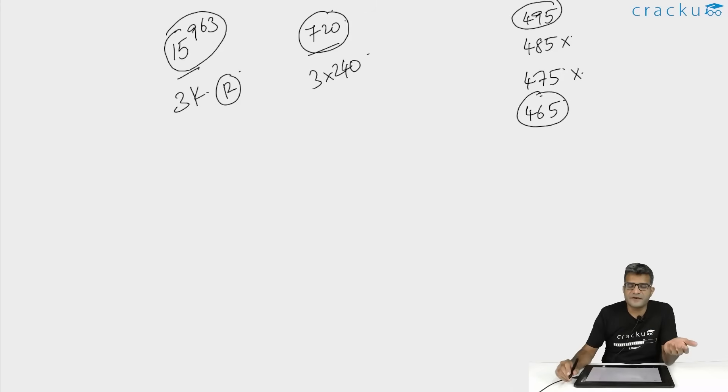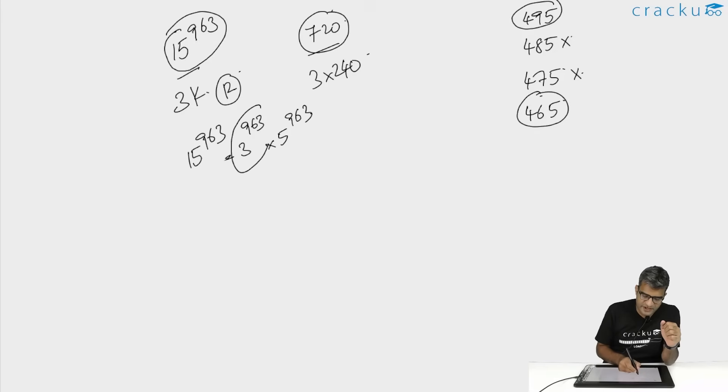Now the second step I realized was that 15 to the power 963, because 15 is 3 to the power 963 into 5 to the power 963, this is actually a multiple of nine. This has 3 to the power 963, so it is a very big power of nine. So I realized that this is actually of the form 9k, which is a multiple of nine. 720, we all know, is 9 into 80. So now I realized that both of them are actually multiples of nine. And if both of them are multiples of nine, the remainder r also has to be a multiple of nine.